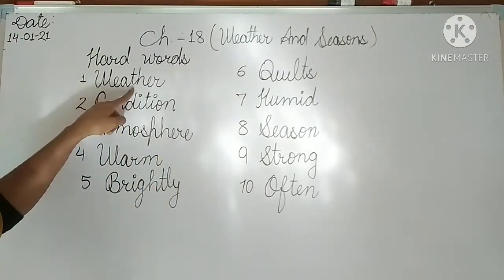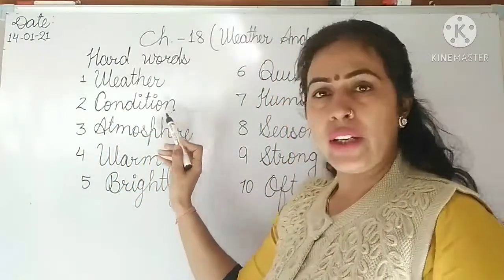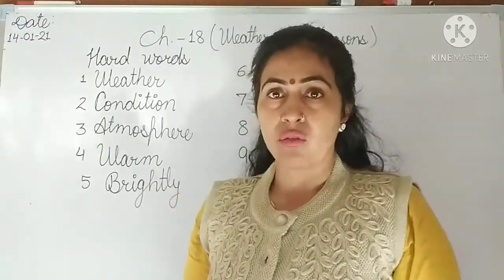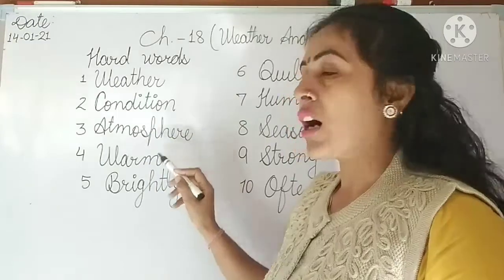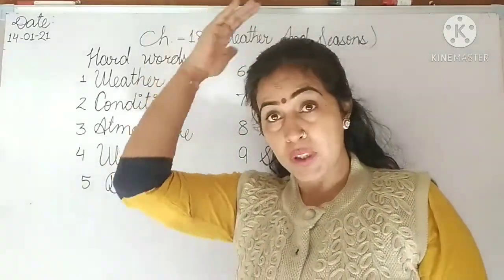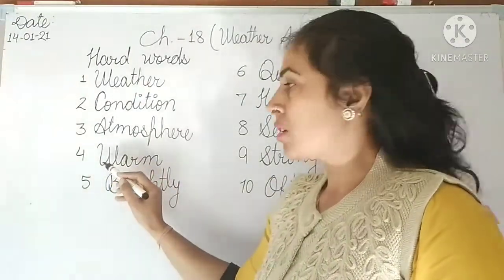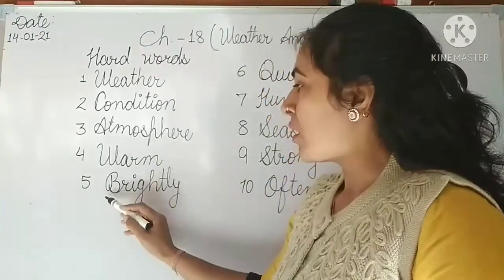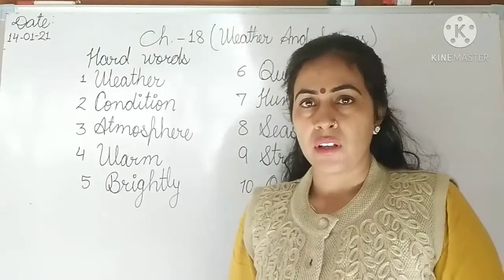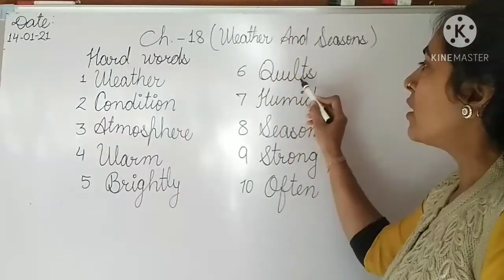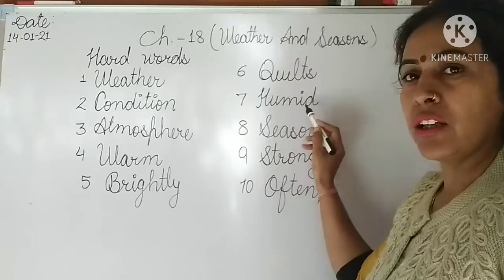Let's revise once again. W-E-A-T-H-E-R — weather. Condition — C-O-N-D-I-T-I-O-N — condition means 'haal,' state, or situation. Atmosphere — A-T-M-O-S-P-H-E-R-E — atmosphere means the surroundings. W-A-R-M — warm means 'garam' (hot). B-R-I-G-H-T-L-Y — brightly means 'chamkila' (shining). Q-U-I-L-T-S — quilts means a heavy blanket or 'rjai.'